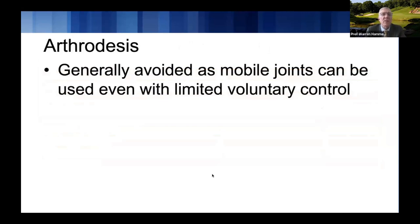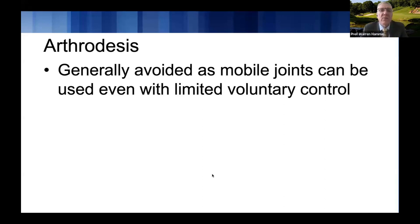Regarding arthrodesis: we generally avoid it when thinking about tendon transfers for nerve palsies, because you can rely on motion at one joint to augment excursion via tenodesis. If you've done a wrist arthrodesis and then try to transfer a wrist flexor for finger extension, you lose that additional augmentation to get from 30 to 50 millimeters of excursion.